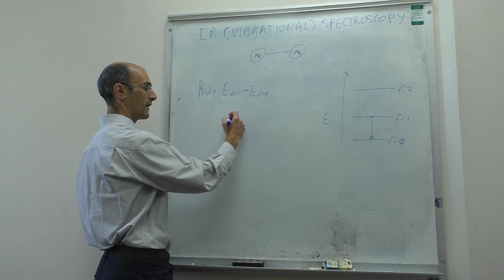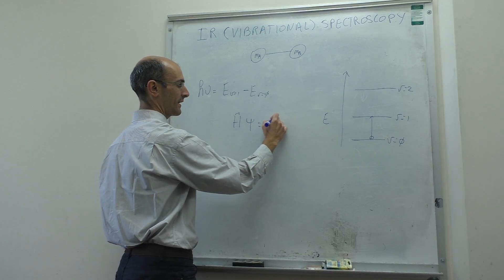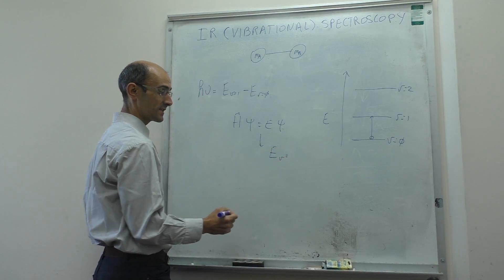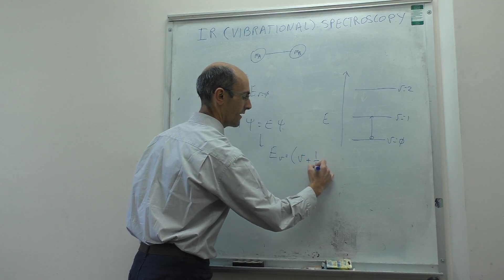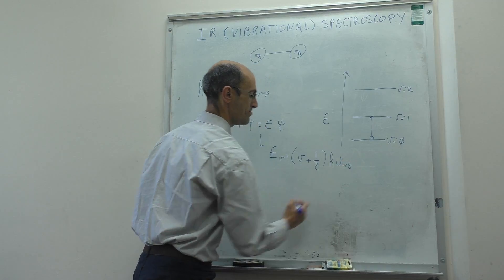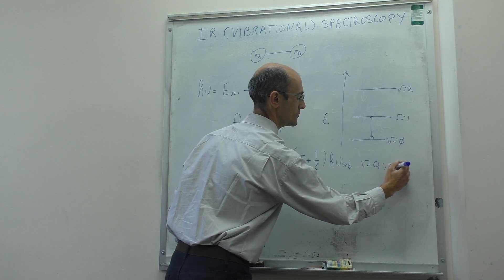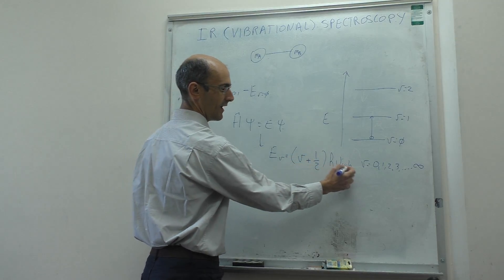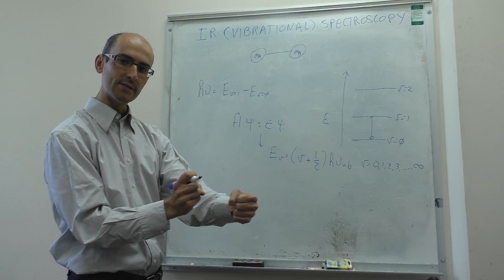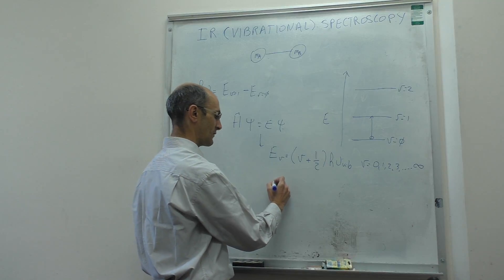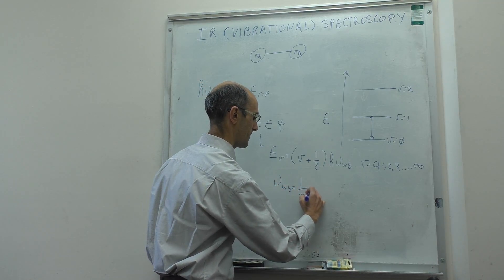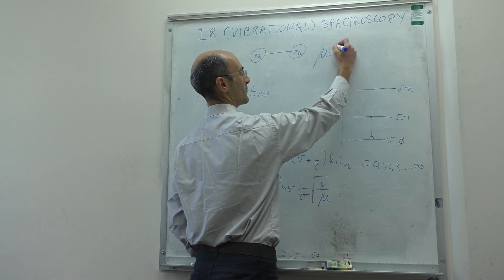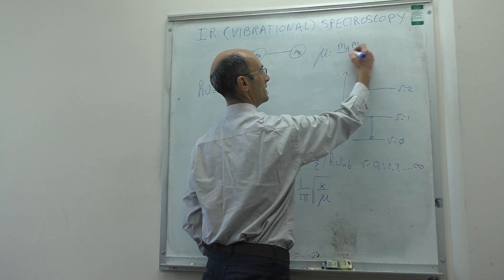When we solved the harmonic oscillator, we set up the Schrödinger equation and solved it, finding that the vibrational energy states have a very simple expression: E = (V + 1/2)hν_vib, where V is the quantum number going from 0, 1, 2, 3, to infinity. The vibrational frequency ν_vib equals (1/2π)√(k/μ), where k is the force constant of the bond and μ is the reduced mass — the product of the masses divided by their sum.